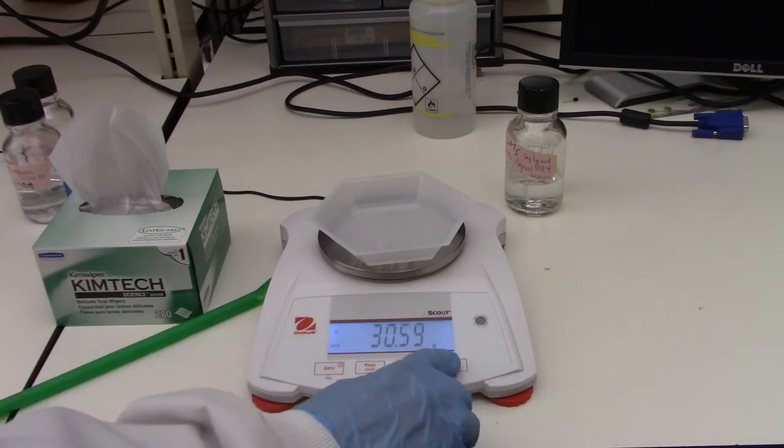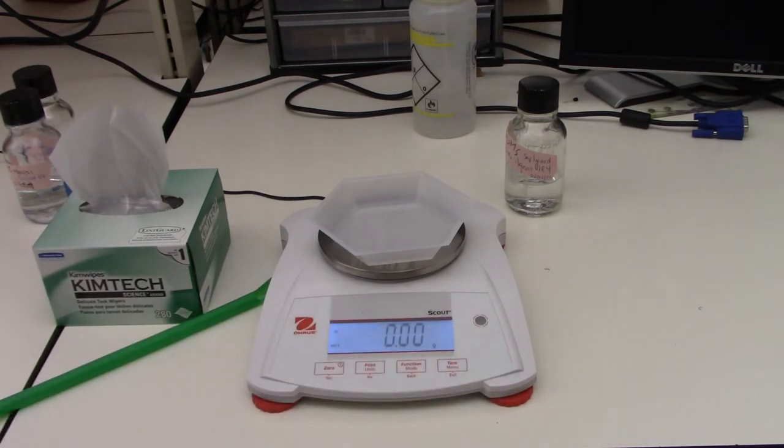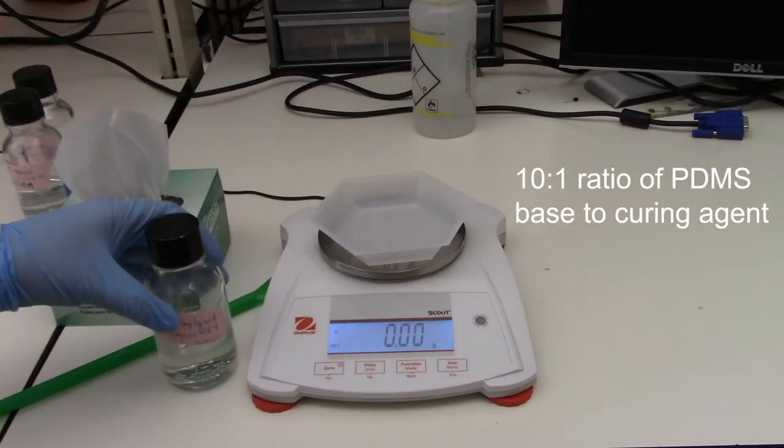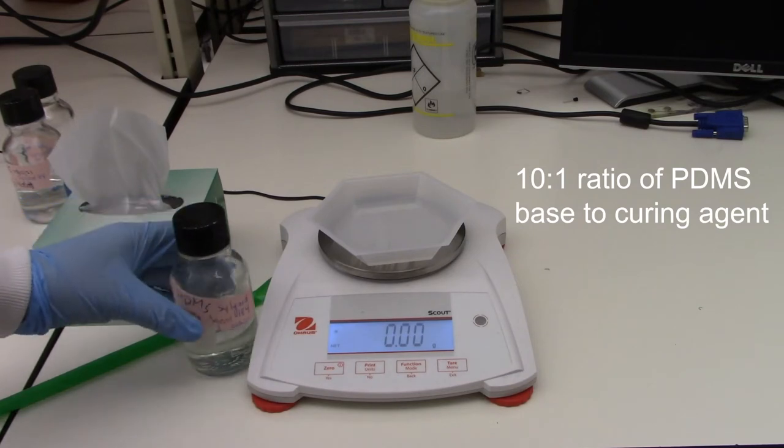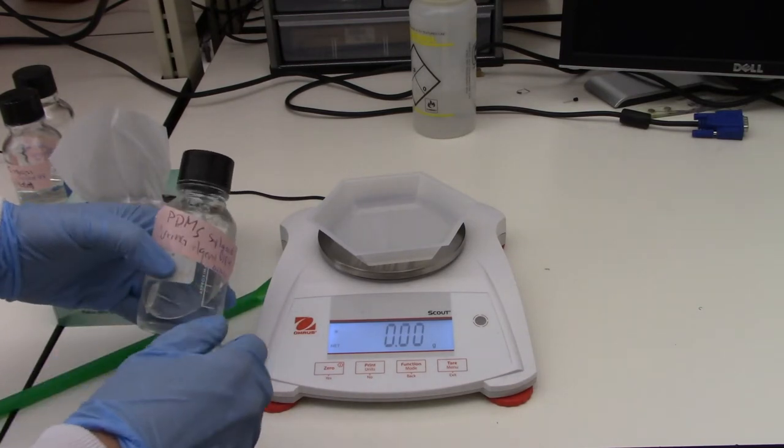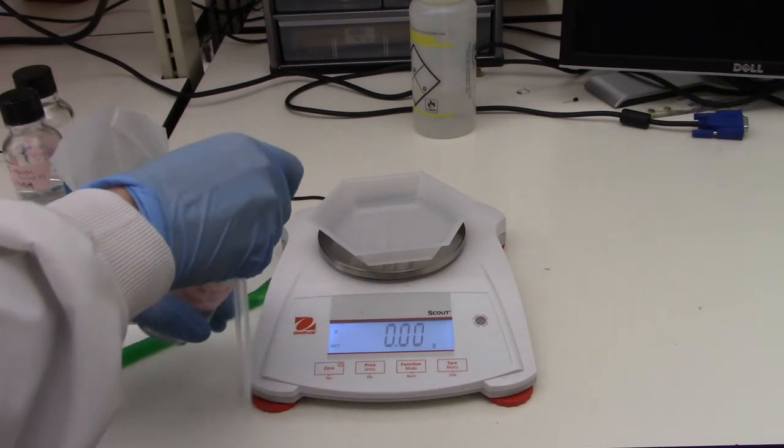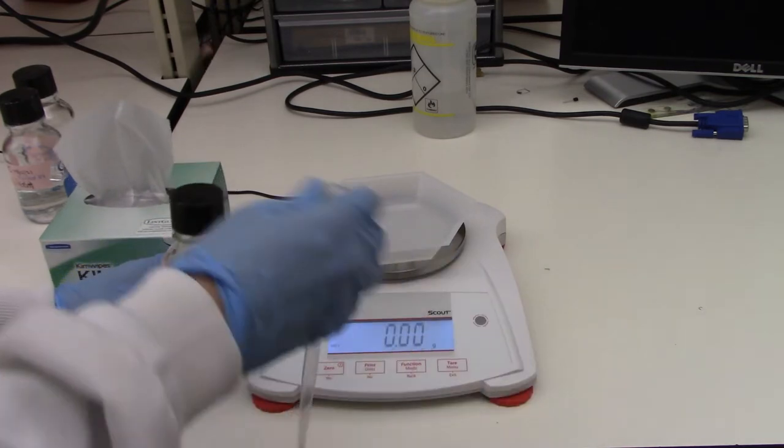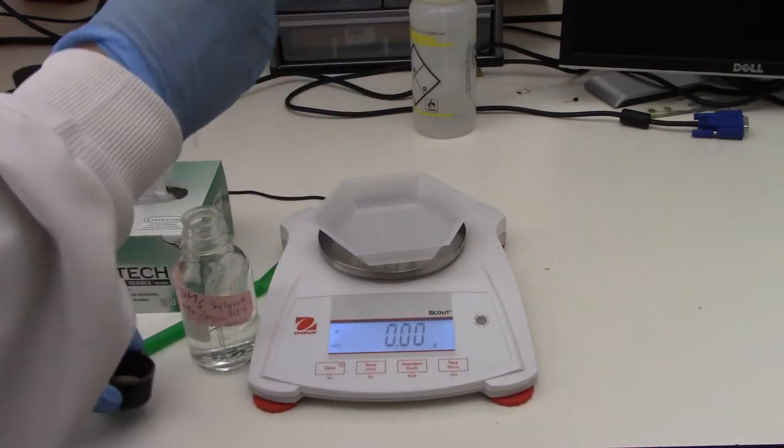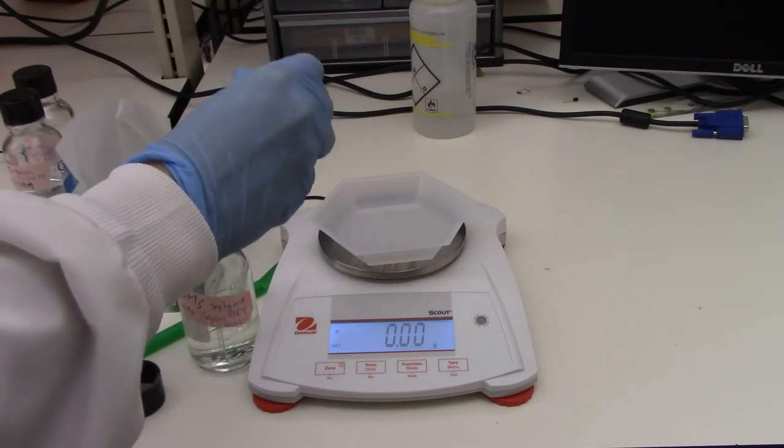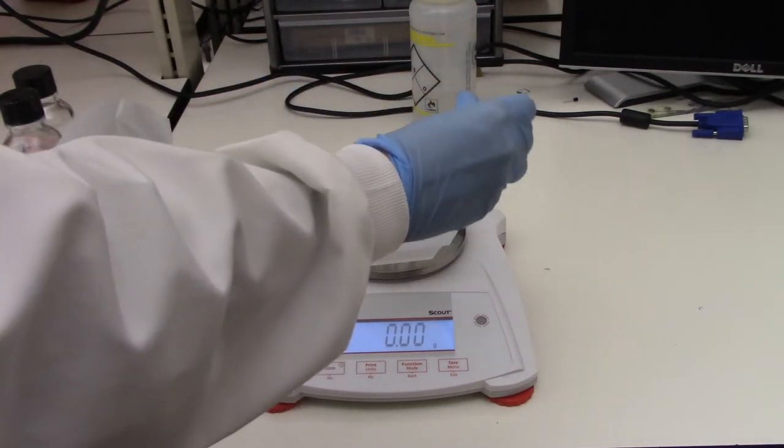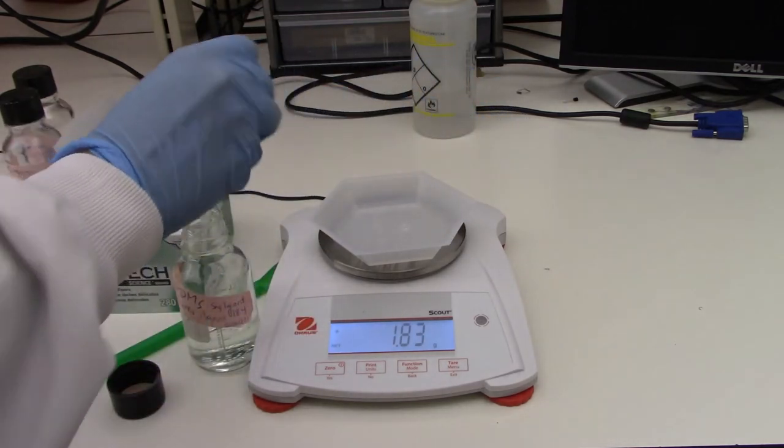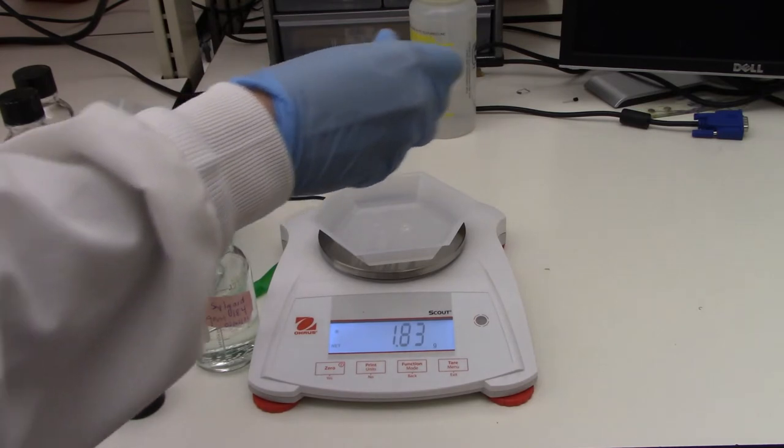So the next one I'm going to do is tare. And then I'm going to take my curing agent here. And in comparison to the base, the PDMS base, the curing agent is less viscous. So it's more of the consistency of water. So instead of pouring, I'm actually going to use a transfer pipette. And we want to measure out three grams. Yeah, that's pretty good. So you can see that went up pretty fast. So we'll go a little bit less on the next amount.